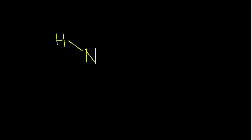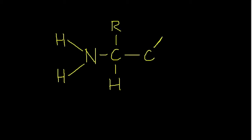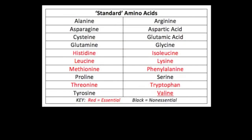Connecting back to the chemistry of life unit, recall that proteins are made of amino acids, the structure of which is shown here. In A1.3 we discussed the difference between essential and non-essential amino acids.